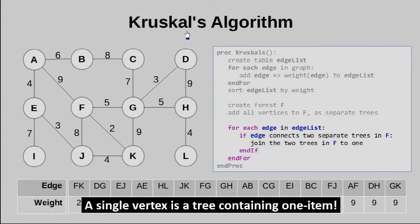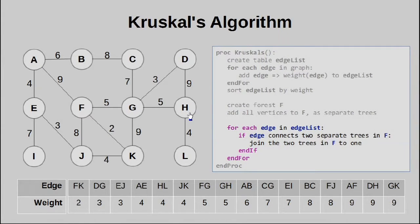So currently, forest F consists of all these vertices as their own separate trees. They are not connected. What's going to happen is, as we trace onwards, they're going to get connected.